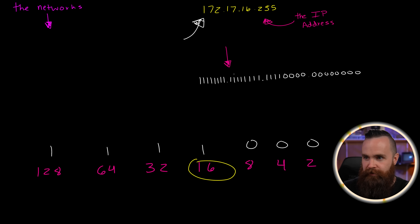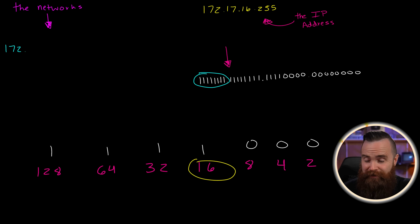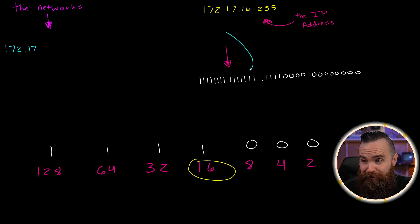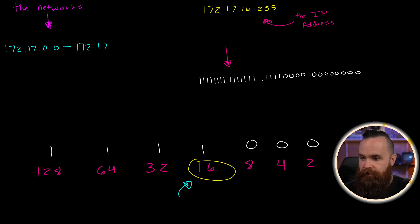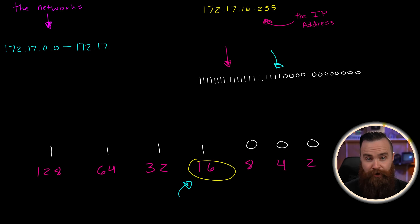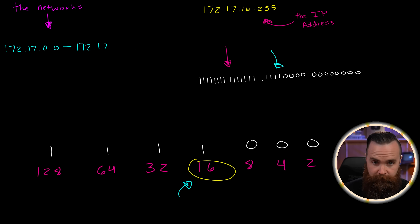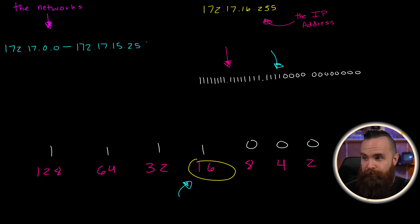Here's our IP address and mask — let's get to work. The first network starts with 172 because all bits in the first octet are network bits, same for 17 in the second octet. The third octet is where things get interesting — we start at zero. Our increment is 16, so the first range goes from 172.17.0.0. You're used to class C addresses incrementing in the fourth octet, but here we increment in the third octet, moving up by 16, ending at 172.17.15.255.